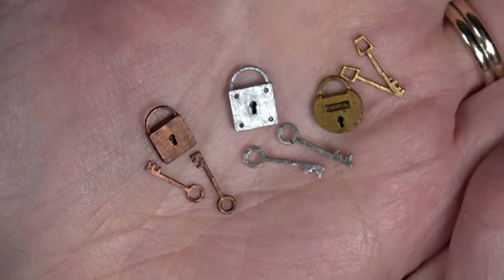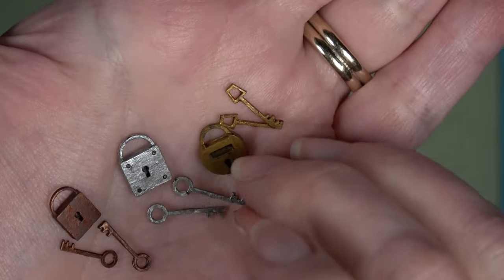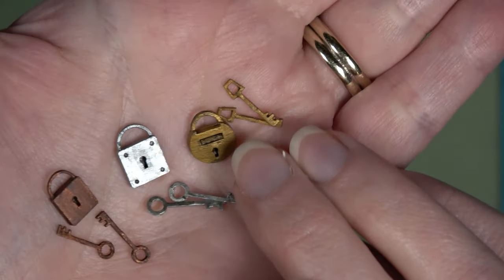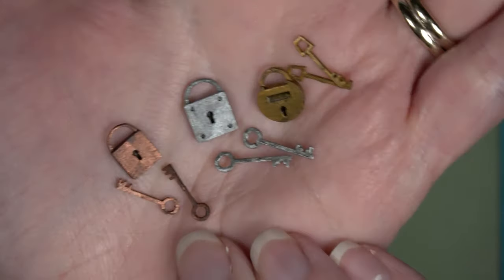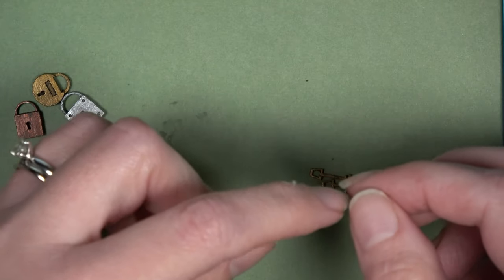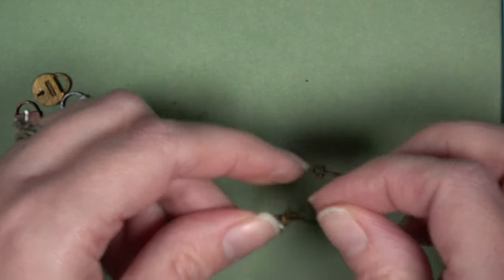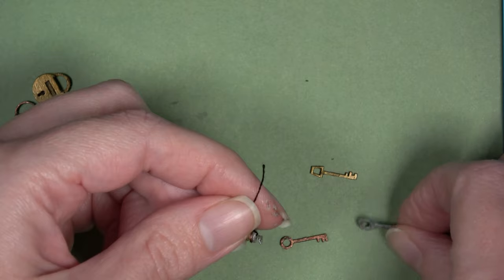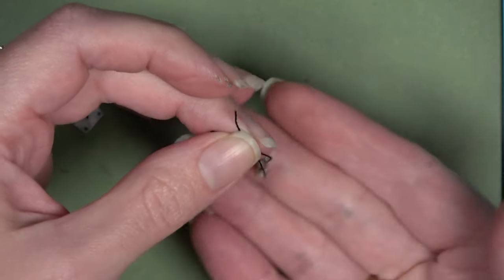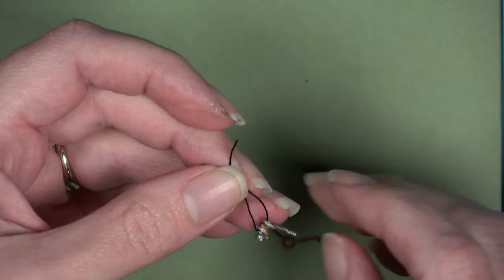These could be really fun in any sort of scene. As you can tell, the locks don't actually open, so I do advise if you're wanting to put them somewhere to get some kind of little jewelry finding or a chain link that you can link into the lock, and that way you don't have to try and cut into the lock part itself. You can also put the keys onto some kind of ring. Here I'm putting them onto a string, and I think when they're all different colors and all different shapes, they look really fun together as a set and they could be hung by a doorway. Just all sorts of really fun things that could be done with these little tiny accessories.